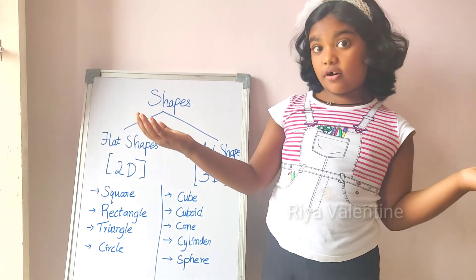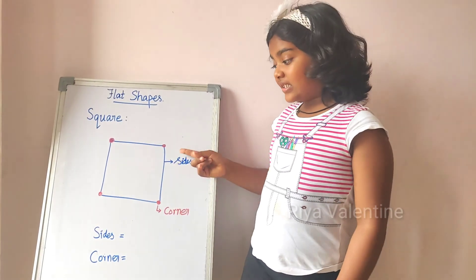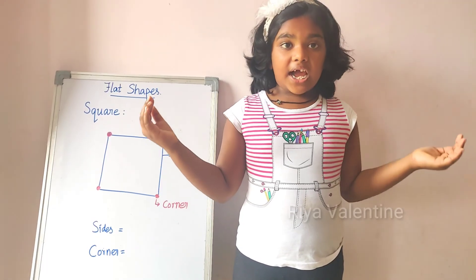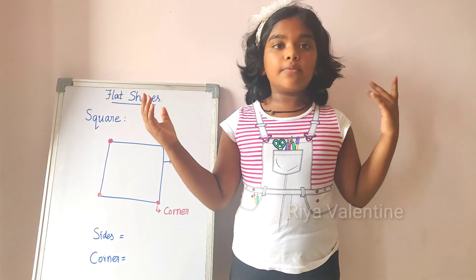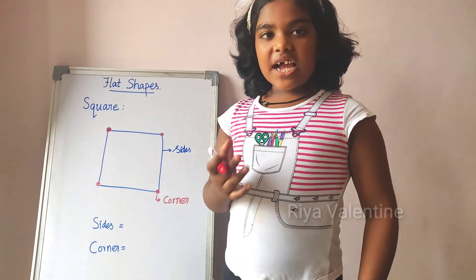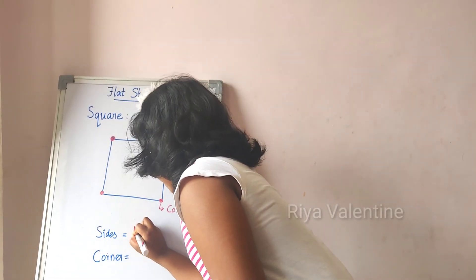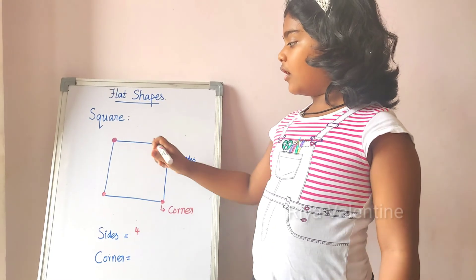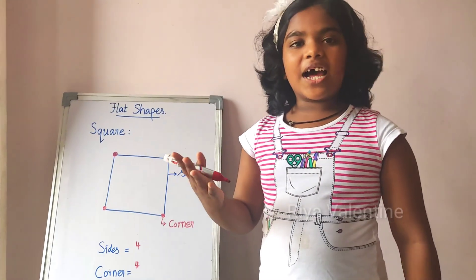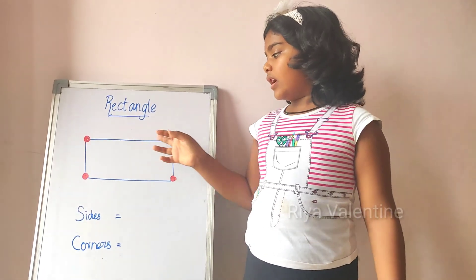So let's see the details of the flat shapes. Let's start with the square. Square has 4 sides and 4 corners. All sides are equal — that is the speciality of the square. Can you tell me how many sides are in the square? Count with me: 1, 2, 3, 4. There are 4 sides and 4 corners.